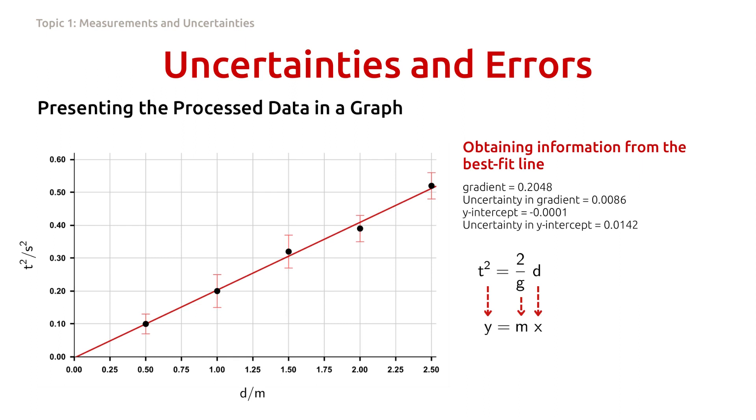Knowing the gradient, we are now ready to calculate the value of g. Again, from this relation, the gradient m is equal to 2 over g. So the value of g equals 2 over m. By substituting the gradient value, 0.2048, we get the value of g, which is 9.766 meters per second squared.